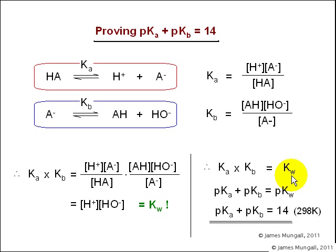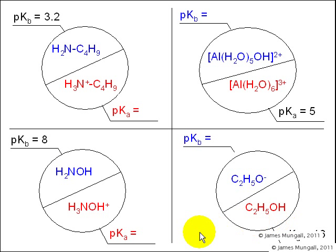Taking logs gives pKa plus pKb equals pKw. And that has a numerical value of 14 at 298 Kelvin. Just one slide of questions here, in which you have to work out the pKa or pKb of the conjugate acid or base.